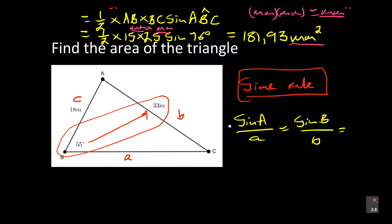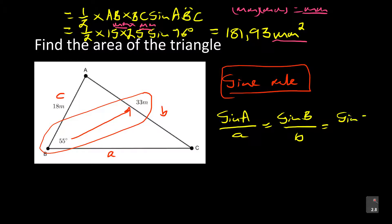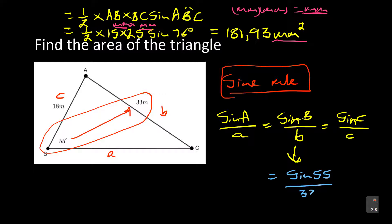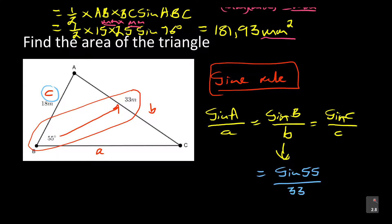Using the sine rule, since I have the pair for angle B and side b, I can write: sine 55 over 33 equals sine C over 18. Now I solve for sine C by cross-multiplying: 33 times sine C equals 18 times sine 55. Dividing both sides by 33, sine C equals 18 times sine 55 divided by 33. Using a calculator, sine C equals 0.4468.